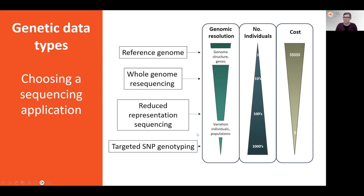If you're more interested in assaying genetic variation across individuals and populations, and not so concerned about understanding underlying genes and gene function, then you're looking at reduced representation sequencing approaches or targeted SNP genotyping. These approaches are on the more cost-effective end of the spectrum and can be applied across large sequencing projects.